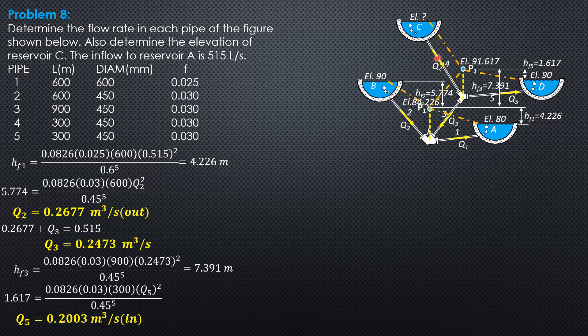From the figure, Q4 equals Q3 plus Q5. So Q4 equals Q3, which is 0.2473, Q5, 0.2003. So Q4 is 0.4476 cubic meter per second.